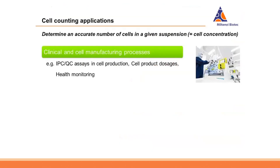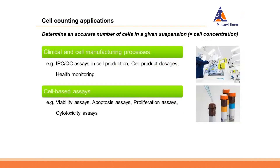Cell counting is being done in numerous ways and also in numerous applications. Most importantly it is done in clinical and cell manufacturing processes such as IPC-QC assays, cell product dosages or health monitoring. In a broader spectrum it's also being done for cell-based assays, viability, apoptosis, proliferation and cytotoxicity assays where you really need to know how many cells you put into the assay to have a qualified result at the end.